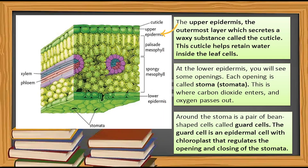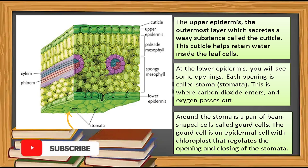The upper epidermis is the outermost layer which secretes a waxy substance called cuticle. This cuticle helps retain water inside the leaf cells. At the lower epidermis, you will see some openings. Each opening is called a stoma or stomata — this is where carbon dioxide enters and oxygen passes out. Around the stoma is a pair of pin-shaped cells called guard cells, which are epidermal cells with chloroplasts that regulate the opening and closing of the stomata.